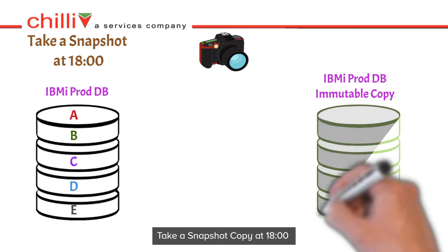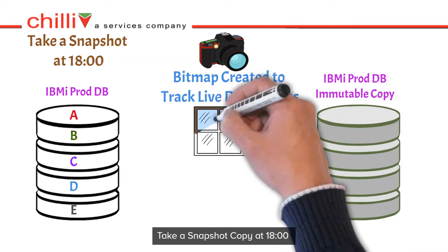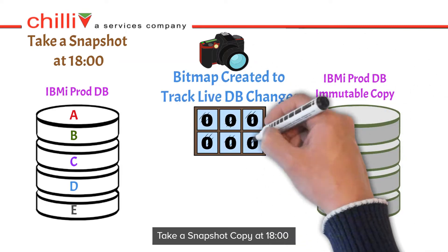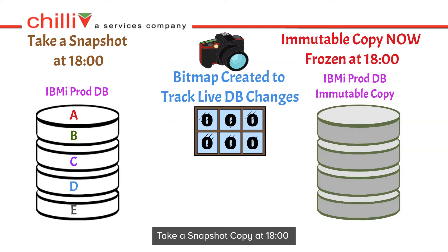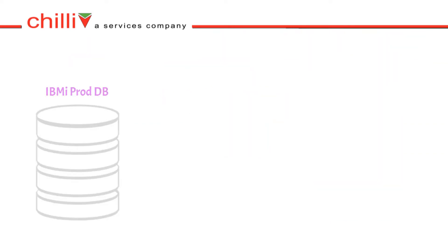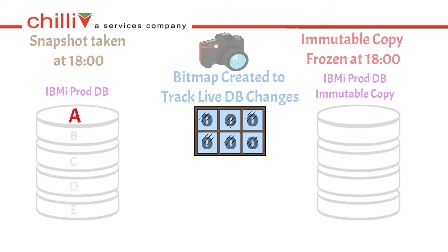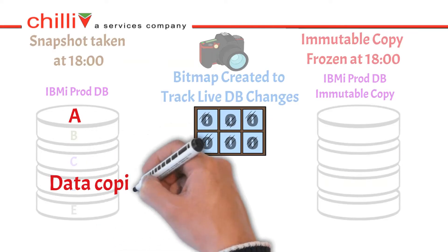When you take a snapshot, for example at 6 o'clock, it will create a bitmap file between the live and immutable copy.